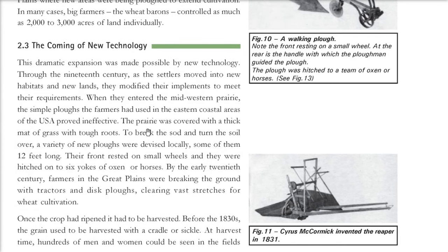By the early 20th century, farmers in the Great Plains were actually breaking the ground with tractors and disc plows, clearing vast stretches for wheat cultivation. But once the crop ripened, there was always a need to harvest. Before the 1830s, they used cradles or sickles, which required a lot of men and women to work.